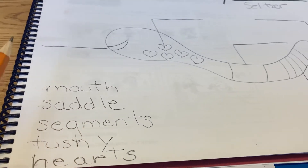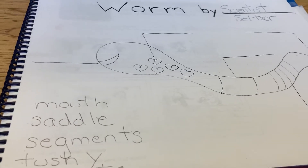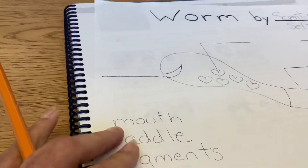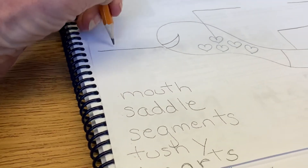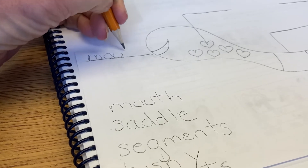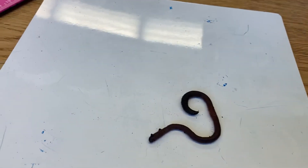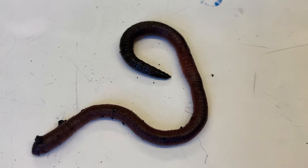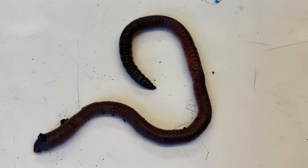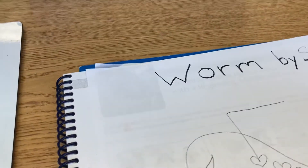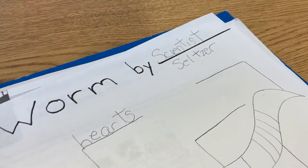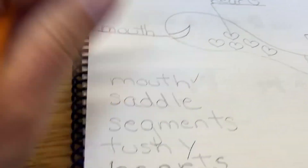The list has: mouth, saddle, segments, tushy, and hearts — because worms have five hearts, we have one but worms have five! You can see I have a line pointing here, and if you think that is the worm's mouth, you're right: M-O-U-T-H. Let's look over at our worm and see if you can find the mouth — a little hard, isn't it? We're not going to open the worm, but if we did we would find hearts: H-E-A-R-T-S.